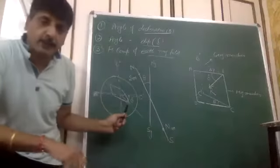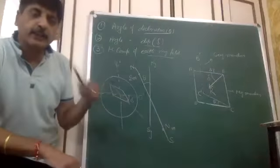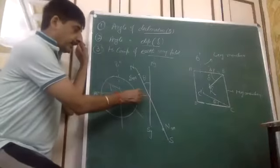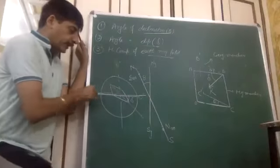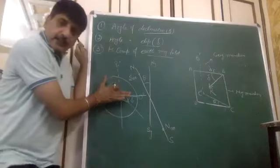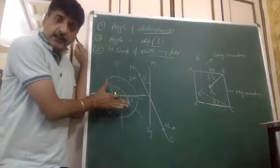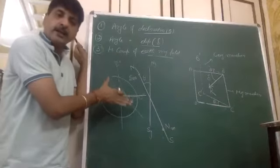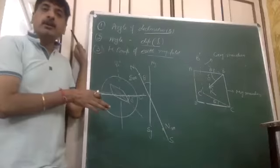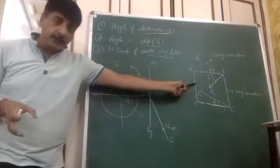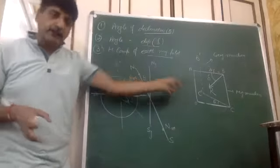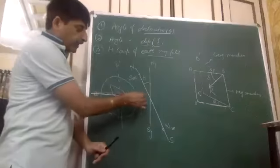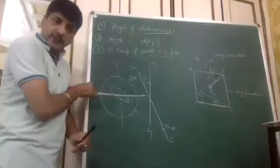The angle of dip value will be different at different locations of the Earth. If we take this line, it will be the equator line. This whole dip circle will be the magnetic meridian. If we take this vertical plane, it will be a dip circle. Across this moment, this line will be the magnetic equator.